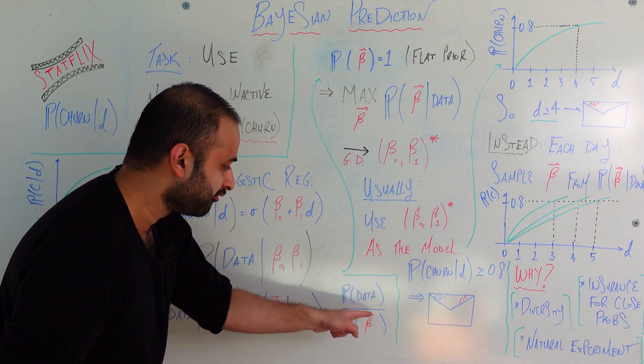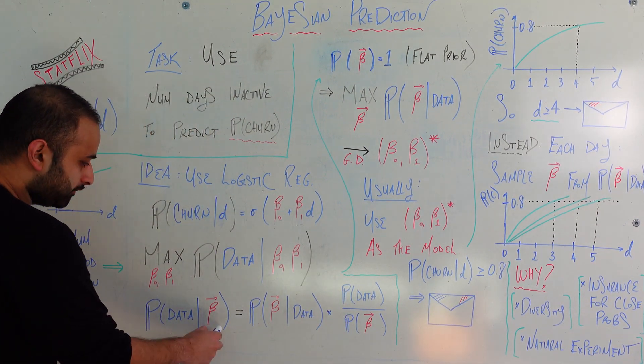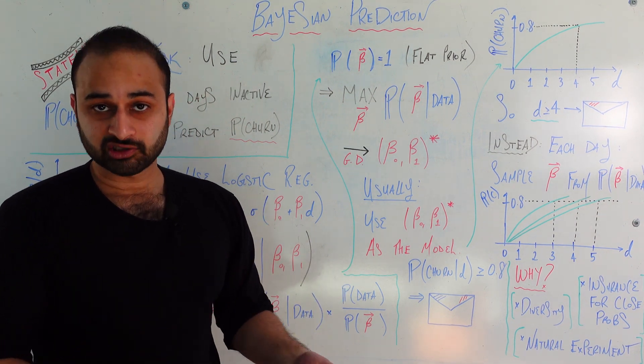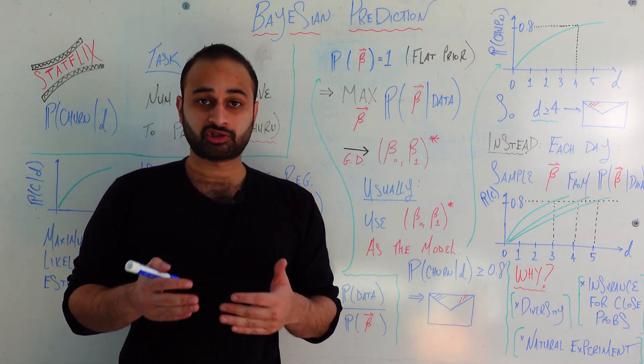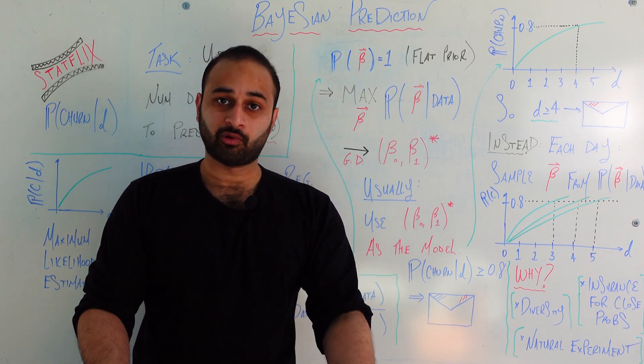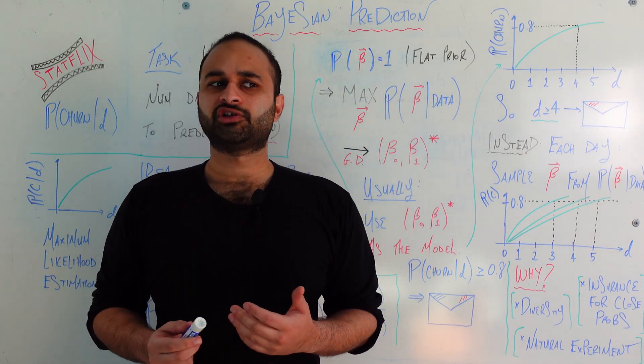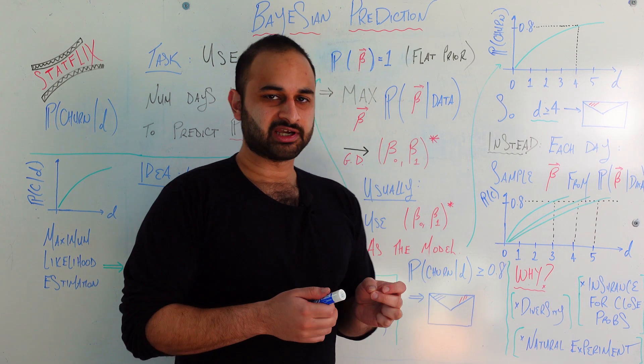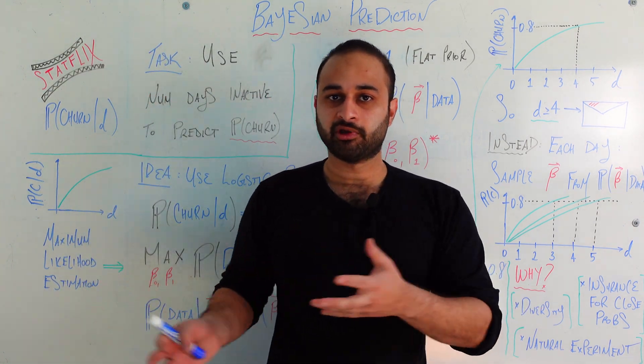And this is very convenient for us because it lets us reframe our maximization problem. We can write that equivalently as the maximum over all possible betas of the reverse conditional. It's because of this key assumption we've made. If you look back at this formula, the denominator now becomes one, so you can effectively ignore it. So the only other term would be probability of data. Notice there's no betas in there, which means that this quantity and the reverse conditional are proportional to each other.